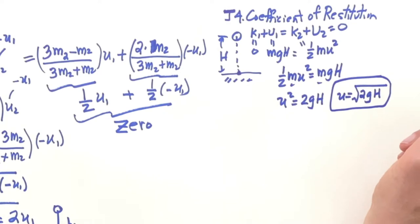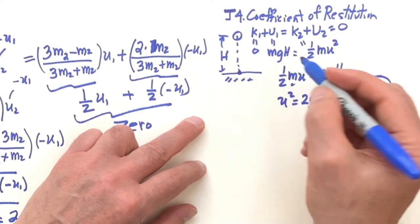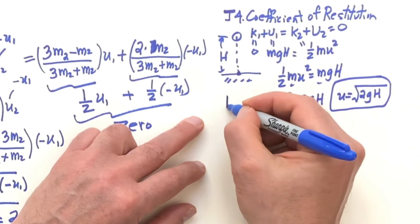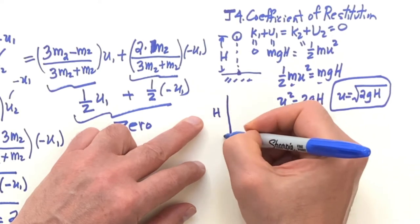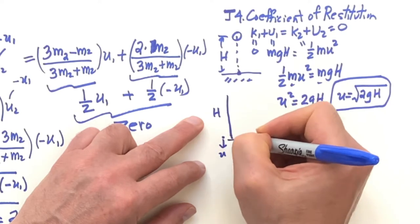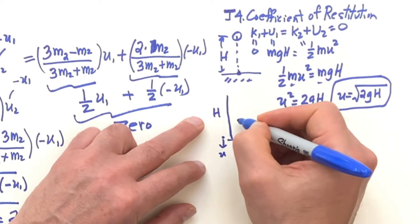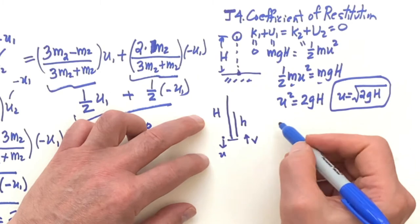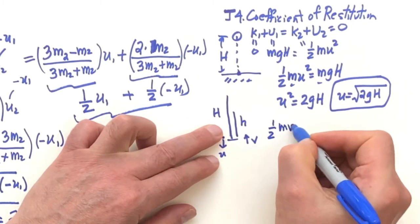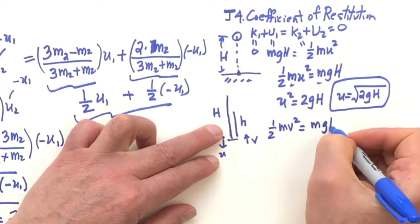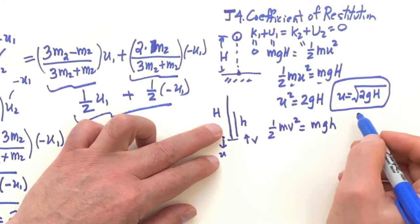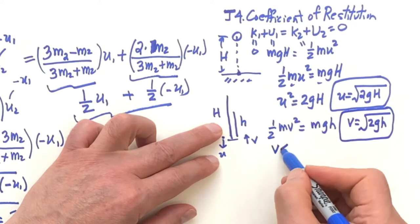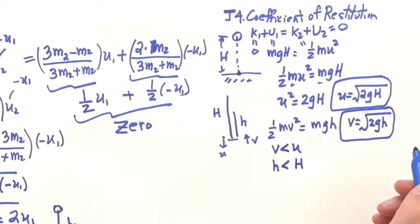Now if the ball has a perfect bounce it'll go right back up to H, because u going down turns around and goes back up. But in real life, if you drop a ball from height H, it comes down with velocity u right before the collision, bounces back up with velocity v, and only rises to some lesser height h. Using the same energy equation, v equals the square root of 2g·h, and since v is less than u, the height h is less than the initial height H.